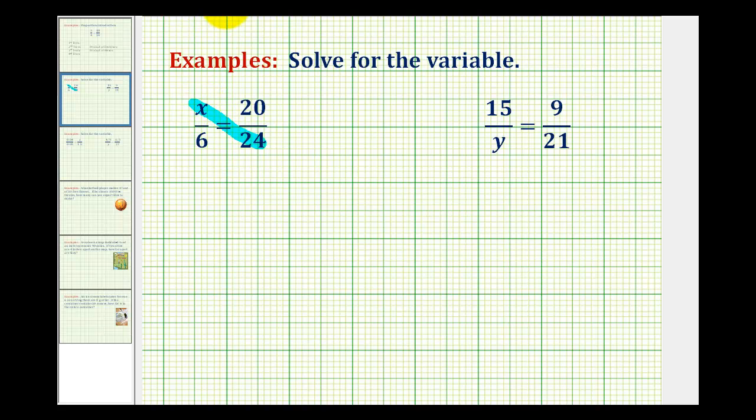So x times 24, or 24x, which would be the product of the extremes, must equal 6 times 20, which would be the product of the means.